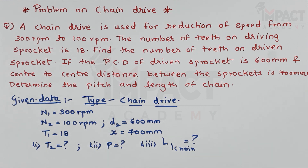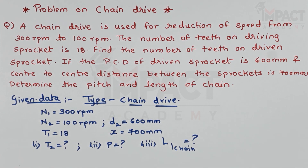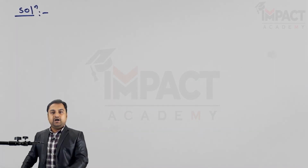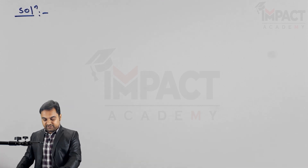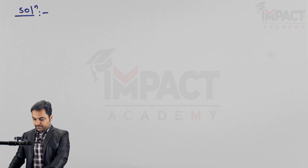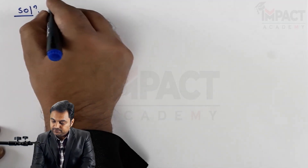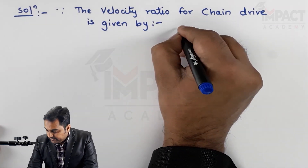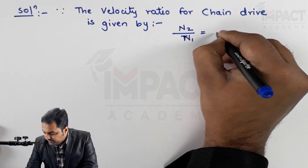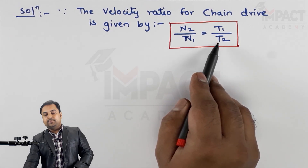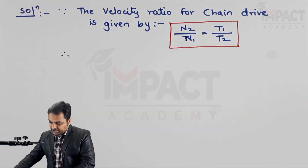In the solution, I'll solve it in steps. First, we find the number of teeth on the driven sprocket. Looking at the data, n1 and n2 are given — the speeds of the driving and driven sprockets. I'll use the velocity ratio formula. For a chain drive, the velocity ratio is given by n2/n1 = t1/t2, meaning speed is inversely proportional to the number of teeth.